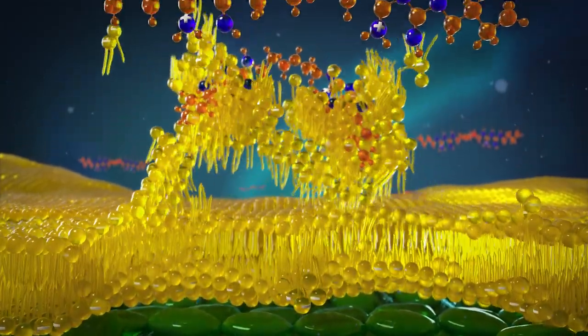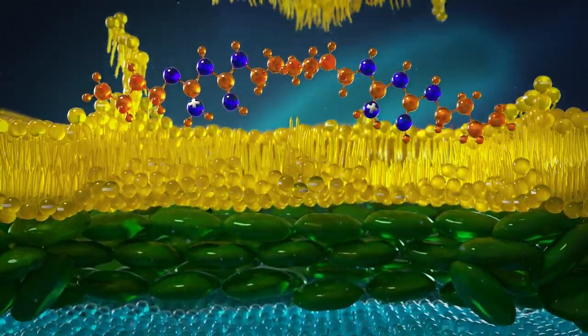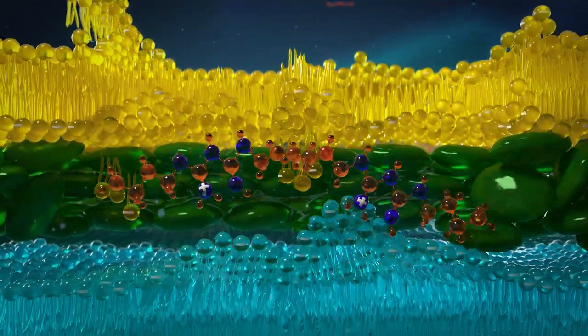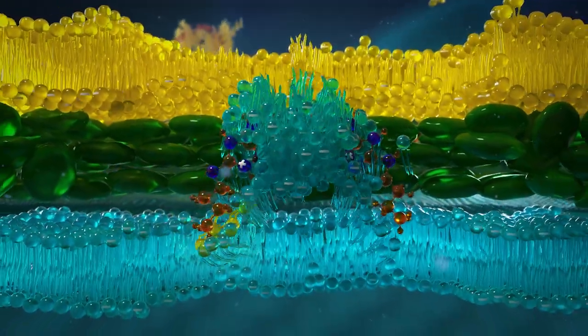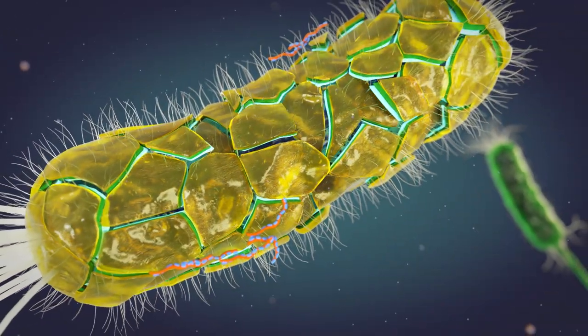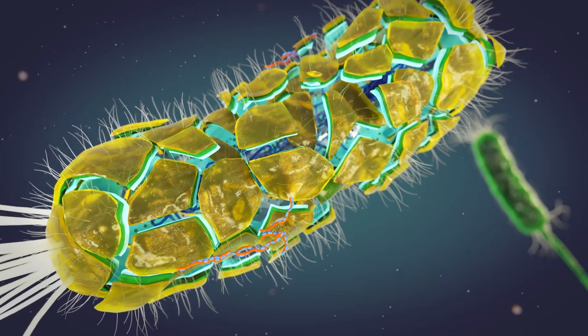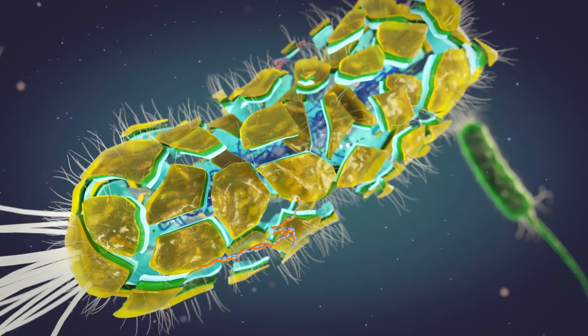PHMB binds itself to the cell wall through electrostatic interaction. The cell wall breaks open and begins to leak where the PHMB molecules attack.